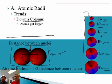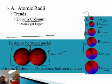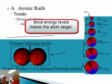As we go down a period, we're adding energy levels. Lithium's outside electrons are in the 2S, sodium is in the 3S, potassium 4S, rubidium 5S, and so on. So as we get higher energy levels, those electrons on average are getting further and further away from the nucleus. As we add energy levels, we get further from the nucleus and get a larger radius.